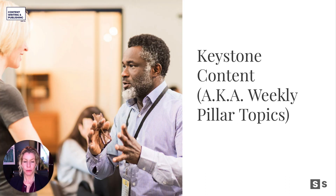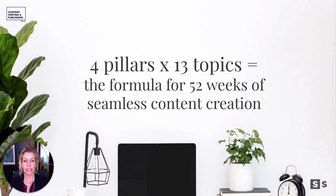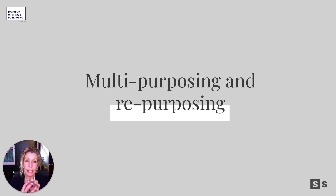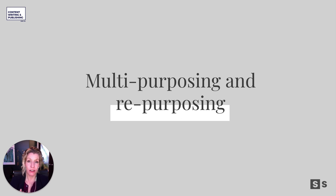So we've talked about the keystone content — the weekly pillar topics that relate to our content pillars — and the idea that it's a formula for 52 weeks of content creation. This is literally the content formula, plus a few other things. If we can multi-purpose and repurpose our content, we're going to get so much further ahead than constantly writing new stuff for our blog versus our video versus our social feeds. We can really hang our hat on one deep, well-thought-out idea and talk about it for an entire week — and that's going to be richer, deeper, authority-building content than just constantly randomly posting within your pillars.